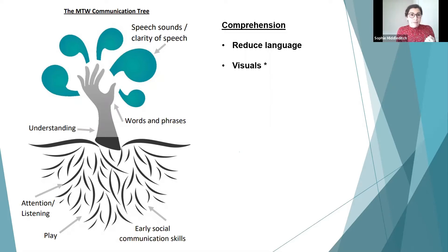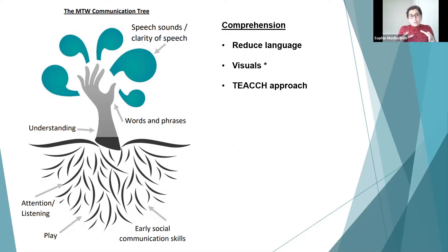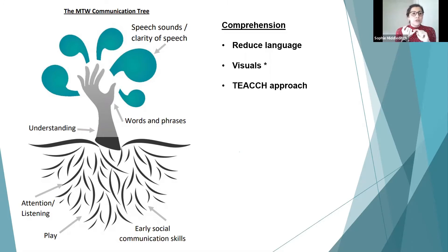Next is the TEACCH approach — an evidence-based, effective and integrated approach for individuals with autism. It has five key principles. The first is physical structure: you want a really clear, defined workspace — a table, corner, or space the child knows is where they do their learning activities. The second principle is having a consistent schedule, communicated through various mediums such as visual timetables using photos, drawings, or symbols.